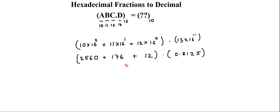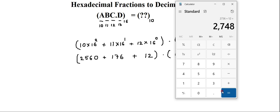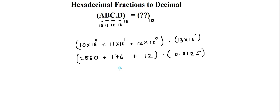Next I just have to add up all these numbers: 2560 plus 176 plus 12. That gives me the answer of 2748. So here the integer part is 2748, and the fraction is .8125. So 2748.8125 is going to be the equivalent number in decimal. This is the process of converting a given hexadecimal number into its equivalent decimal number.